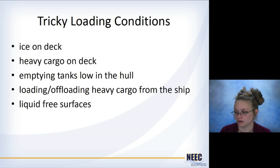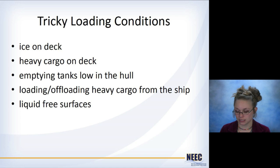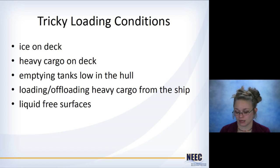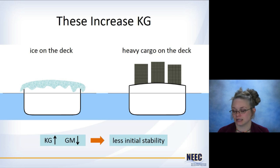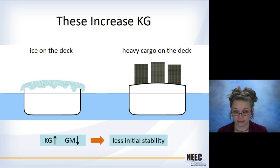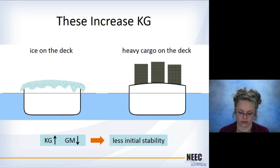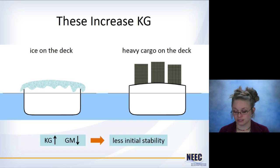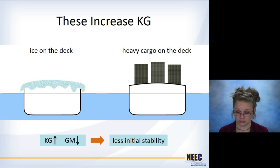Heavy cargo on the deck, offloading heavy cargo from the ship — both of these can affect stability. If you're emptying tanks that are low in the hull, that could be of concern. All it means is that you have some heavy weight that's up high in the ship. Because it's high, it's going to increase KG, which is the center of gravity, which means KG going up means that GM will go down. So you have decreased GM, and GM was our measure of initial stability on the ship — so if you have less GM, you have less initial stability.